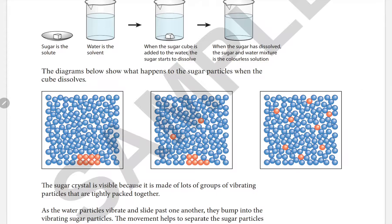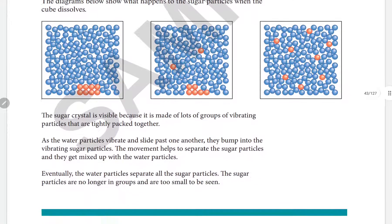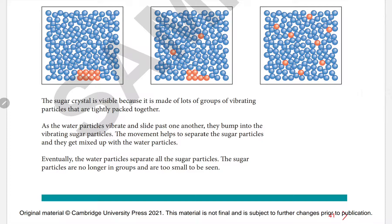A particle diagram explains this process. Water molecules are shown, and at the bottom we can see the sugar particles. The sugar particles gradually start dissolving and spread out. The sugar crystal is visible because it is made up of lots of tightly packed vibrating particles.